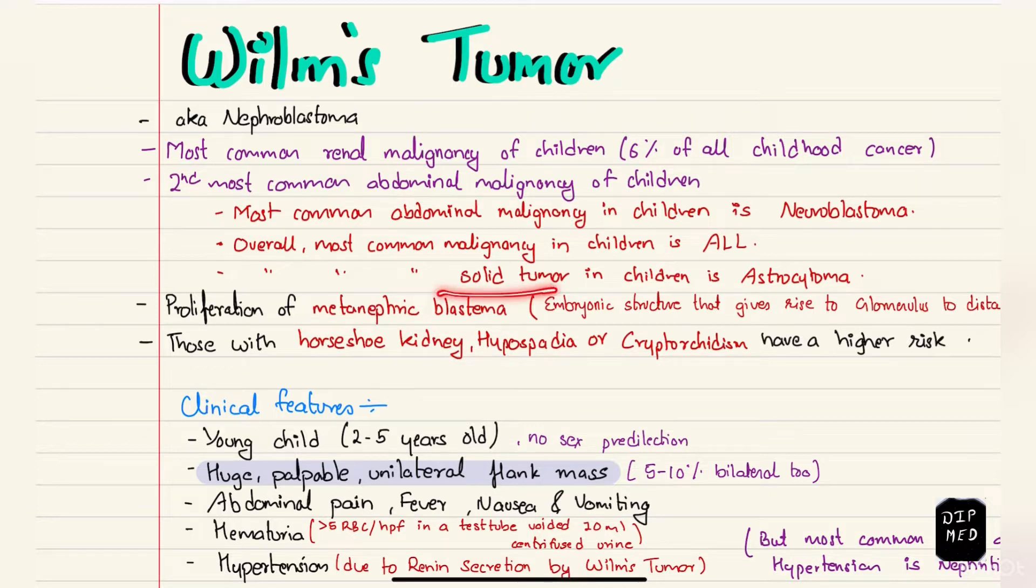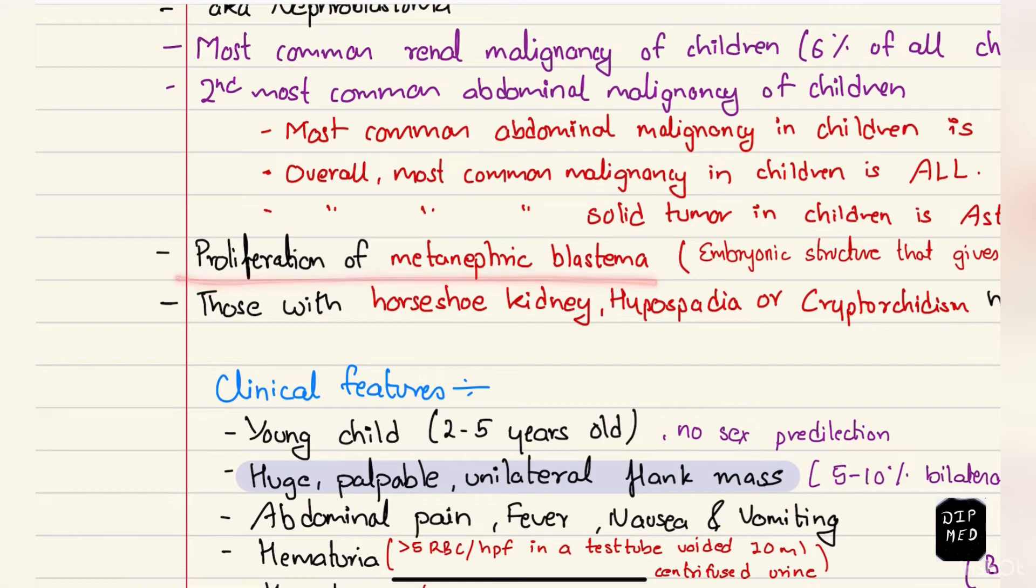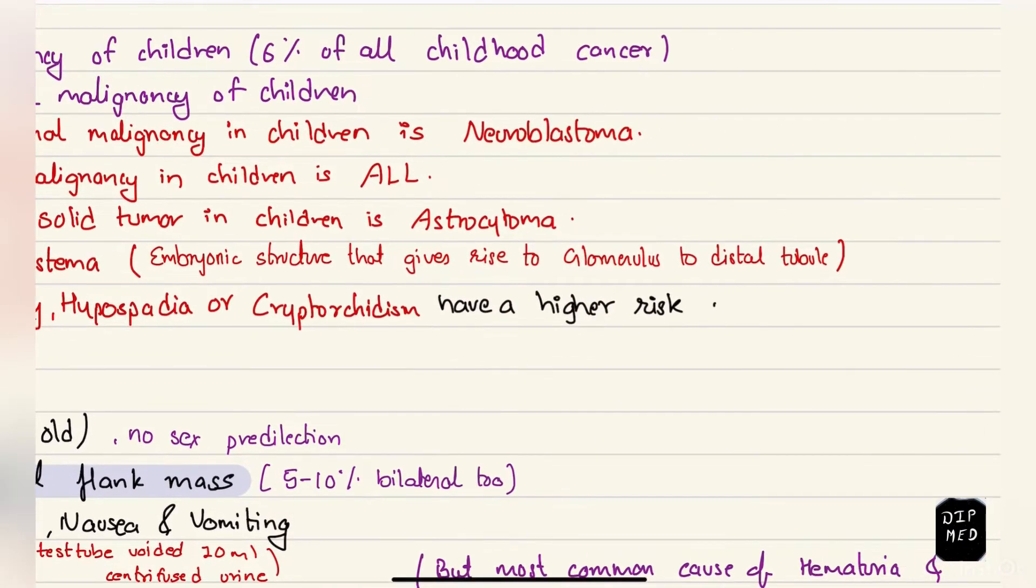The most common solid tumor is astrocytoma, a type of brain tumor. In Wilms tumor, there is proliferation of metanephric blastema, an embryonic structure that gives rise to structures from glomerulus to distal tubules.